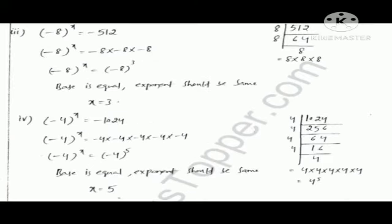In part 4: minus 4 raised to the power x equals minus 1024. Since the base is 4, we write 1024 as a power of 4, which gives minus 4 to the power 5. Since the bases are the same, x equals 5. In part 5: 2 upon 5 raised to the power x equals 32 upon 3125. We write 32 as a power of 2 and 3125 as a power of 5, giving 2 upon 5 to the power 5, so x equals 5.